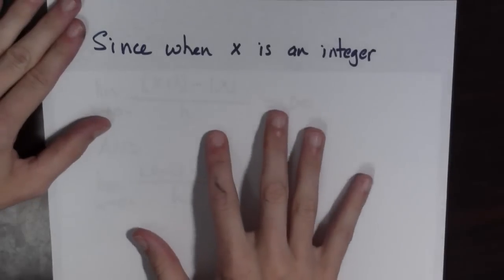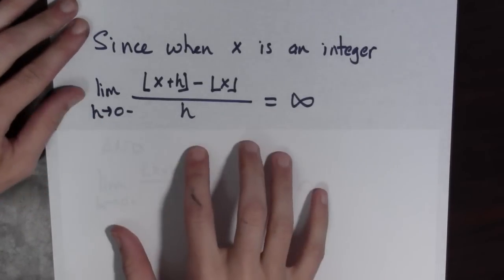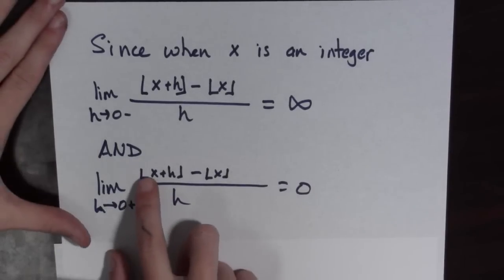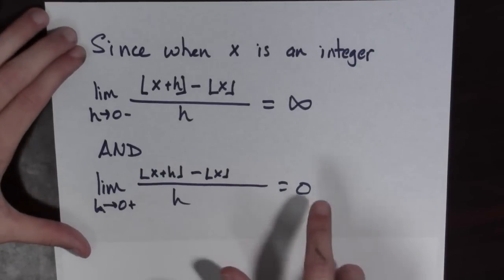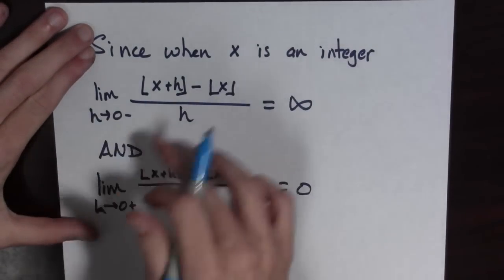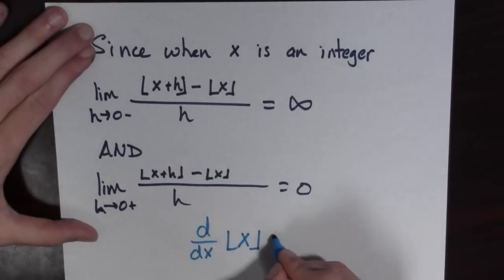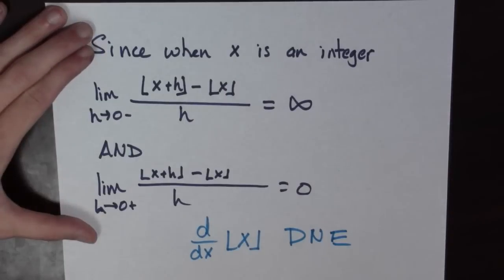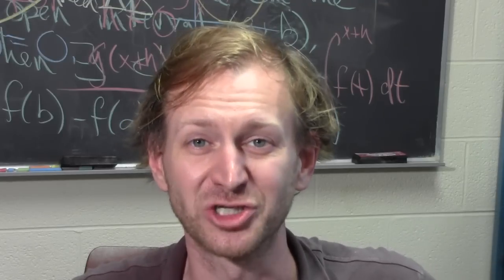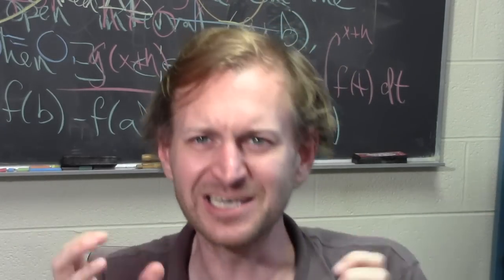But what does this mean? Let's put our previous work together. Since when x is an integer, we have the limit from the left as h goes to 0 equals infinity, and we have the limit from the right as h goes to 0 equals 0, we see the left-hand limit and the right-hand limit are not equal. And so what this means is that the limit as h goes to 0 doesn't exist, which means that the derivative of the greatest integer function does not exist at integers. So we've seen that the derivative of the greatest integer function is 0 except when x is an integer, and when it's an integer, the derivative doesn't exist. What a strange yet very simple function.